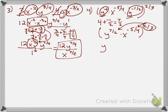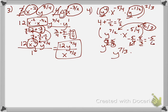Now I apply the power of a product and distribute the exponent of two-thirds to both the seven-halves and the negative five-fourths. Multiplying fractions: top times top and bottom times bottom. Seven-halves times two-thirds gives 14 over 6, which reduces — canceling the factors of 2 — to seven-thirds. So I get y to the seven-thirds. For x, negative five-fourths times two-thirds: canceling 2 into 4 twice leaves negative 5 over 6. So I have x to the negative five-sixths.